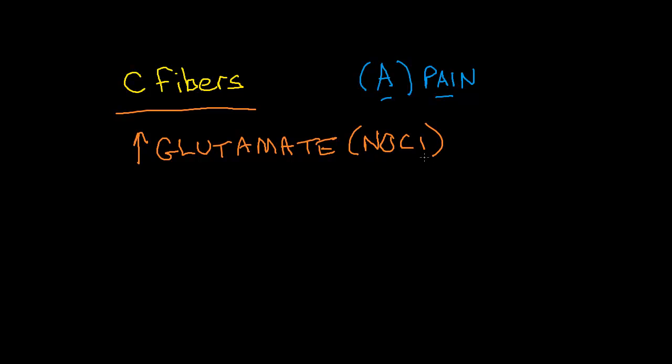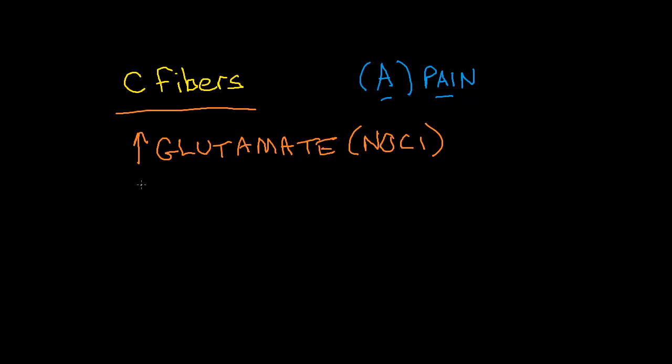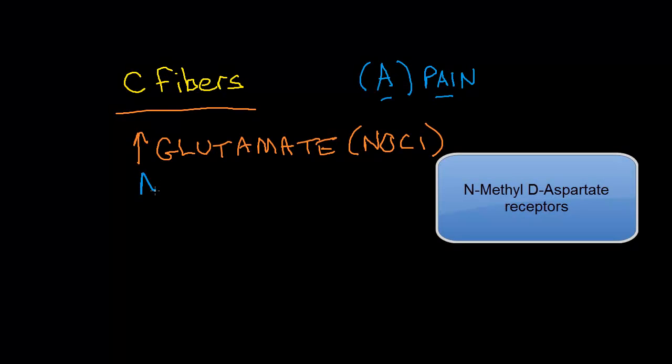Another thing that happens is that in order for glutamate to work, we need more receptors that will accept glutamate. As it turns out, we get more of those two: these are the N-methyl-D-aspartate receptors.